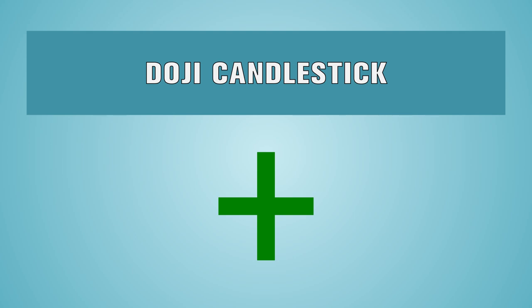Another shape you see on a Japanese candlestick chart is a doji candlestick. This signifies that the price opened and closed at the same or close to the same price.